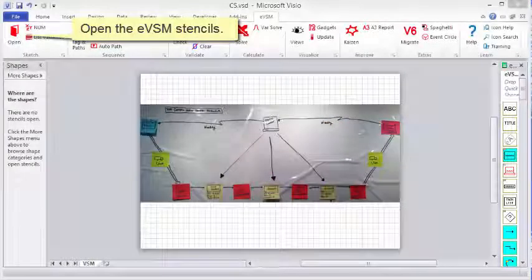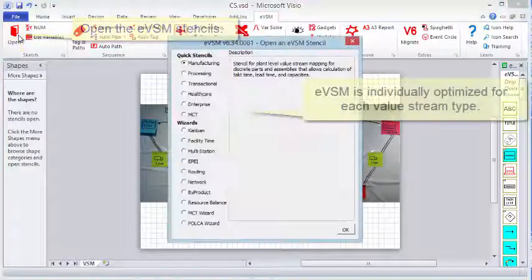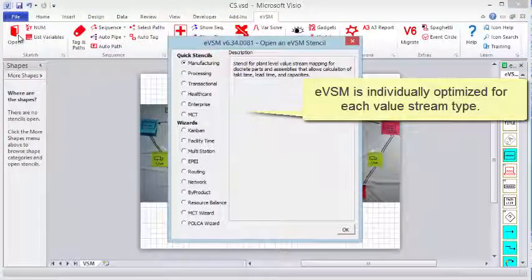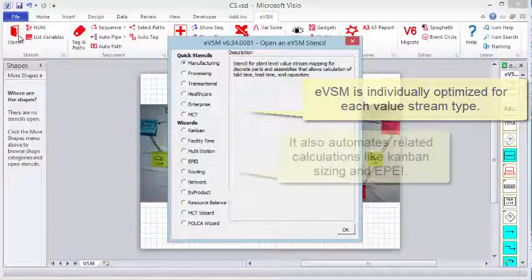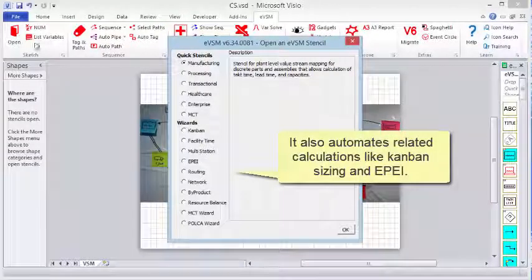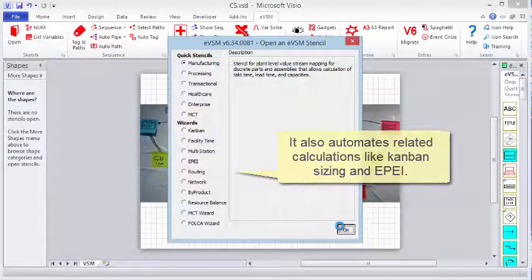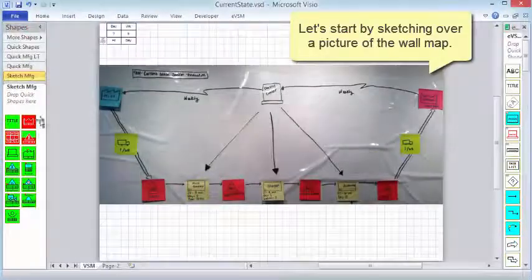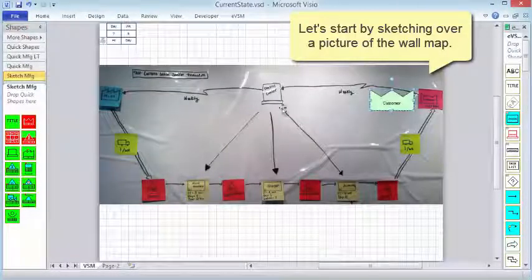First, open the EVSM stencils to select the map type. EVSM is optimized for different map types. It also includes wizards that support common VSM calculations. Let's start by sketching over a picture of the wall map.